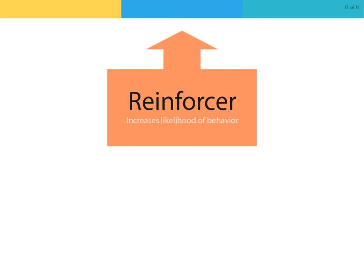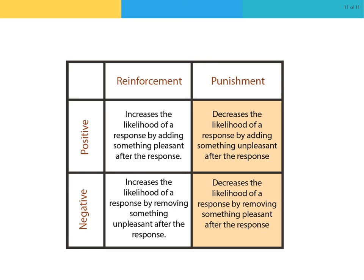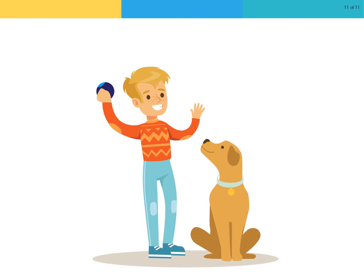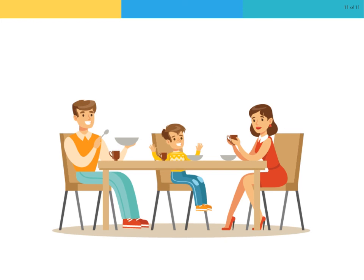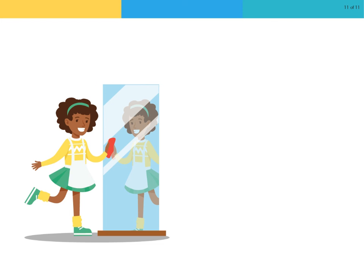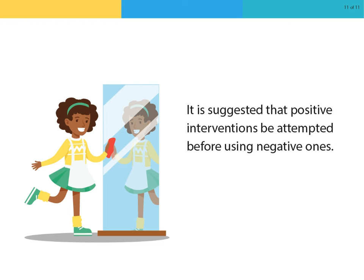In review, reinforcement works by increasing the likelihood of a behavior while punishment works by decreasing the likelihood of a behavior. Positive reinforcement or punishment is when something is added in order to change the behavior; negative reinforcement or punishment is when something is removed in order to change the behavior. As explained in the various examples, operant conditioning can be used to modify behavior using positive and negative consequences. However, research suggests that positive consequences produce better results than negative consequences, so it is suggested that positive interventions be attempted before using negative ones.